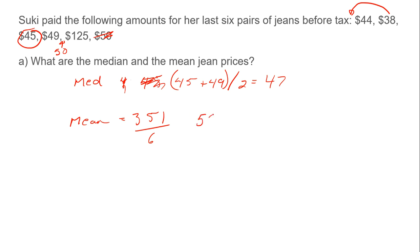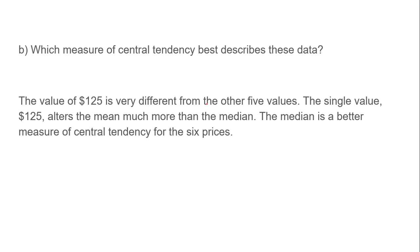The mean is 58.5, which is weird because she didn't really pay 58 bucks for any of these pairs of jeans. It was either 50 or below or $125. Which measure of central tendency best describes these data? 125 changes everything because 125 is such an outlier. It changed the mean so much, so we can't use the mean. It's altered too much.